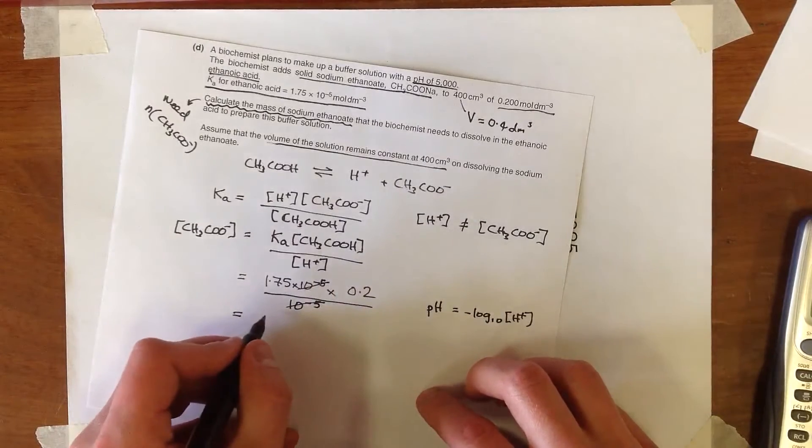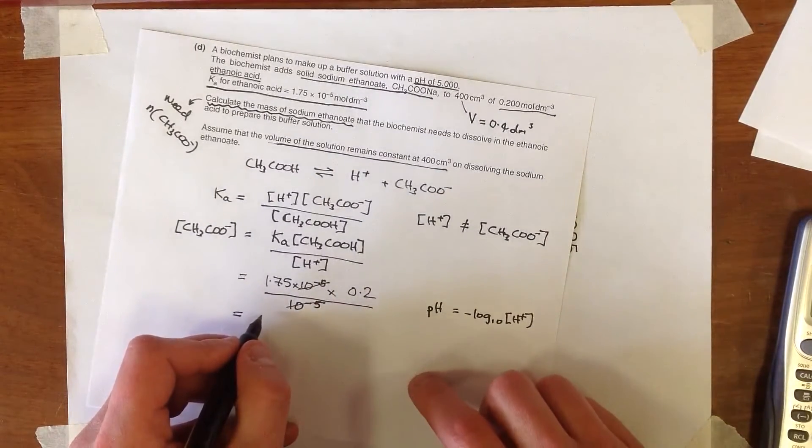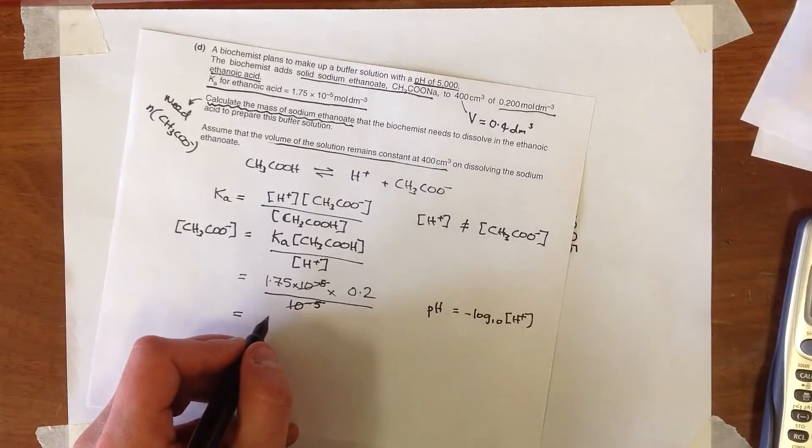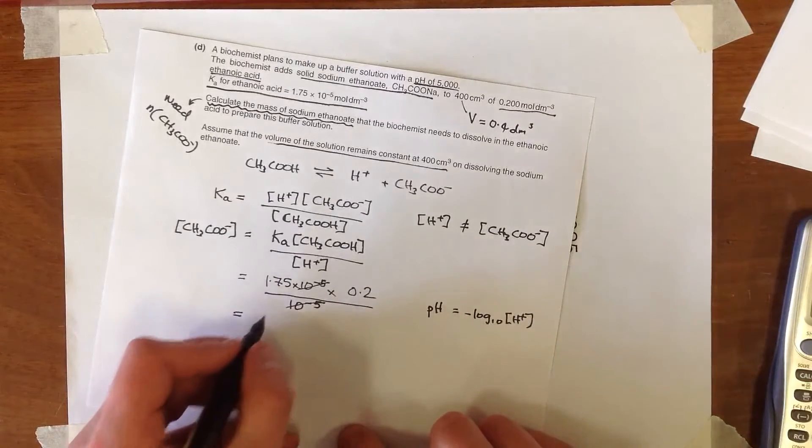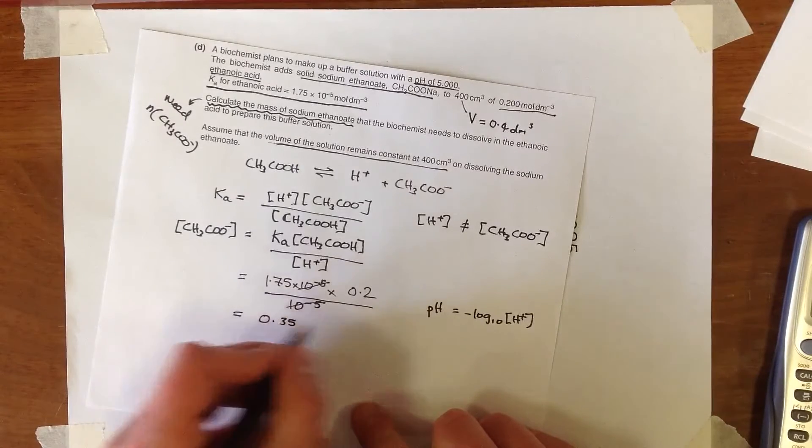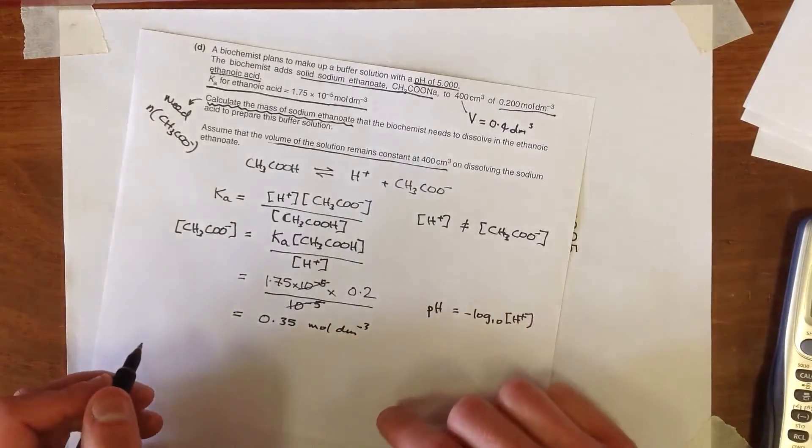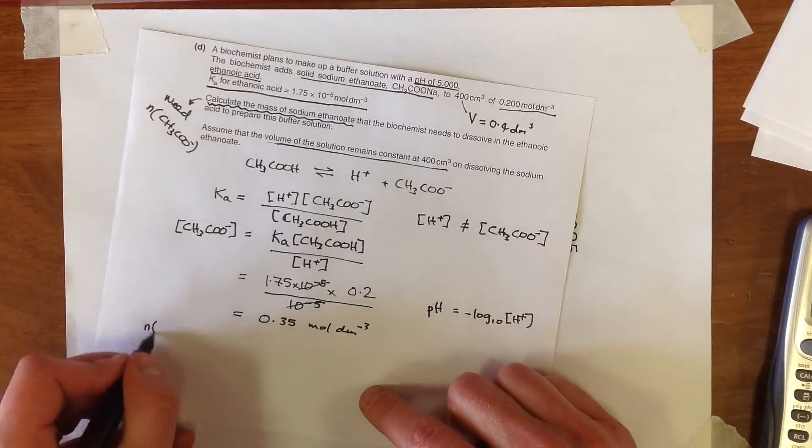And conveniently here, the 10 to the power minus 5s cancel, and so we end up with a concentration of ethanoate of 0.35 moles per decimetre cubed. Now we're almost there. We need to work out the number of moles of this now.